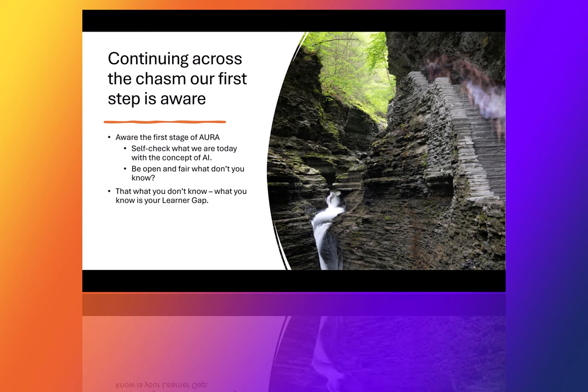It doesn't require that everybody in the company become an AI expert. But this training model helps you build capacity — it tells you who in your company is interested in AI. People with an interest and a desire to learn will learn. That's what AURA helps you with: it helps the learner gain the skills they need to be successful, and it helps the company figure out who's really excited about AI.